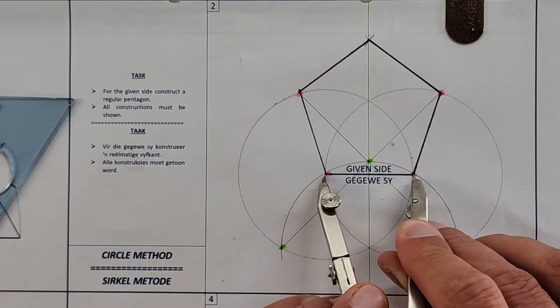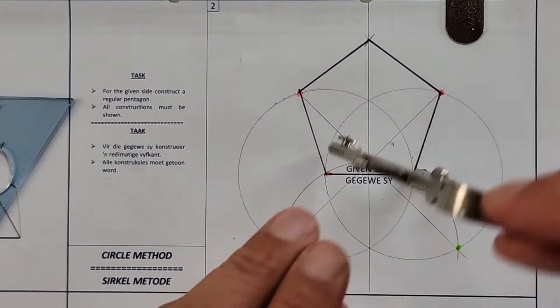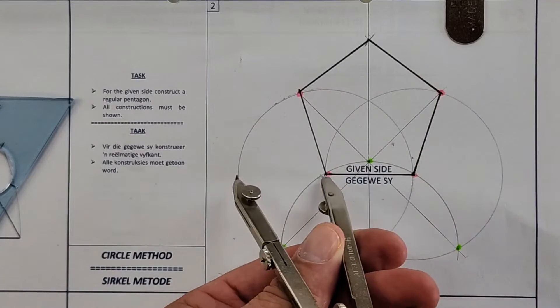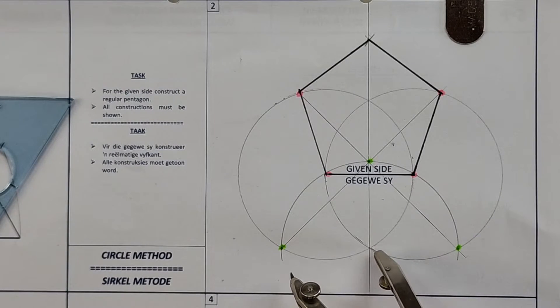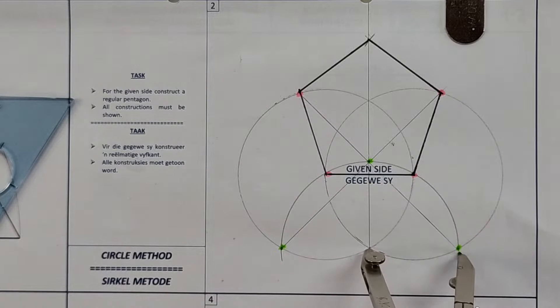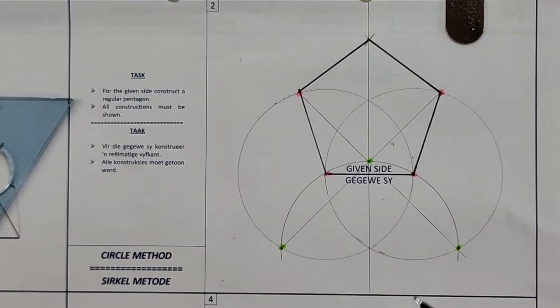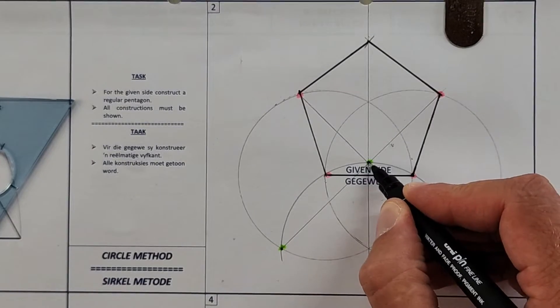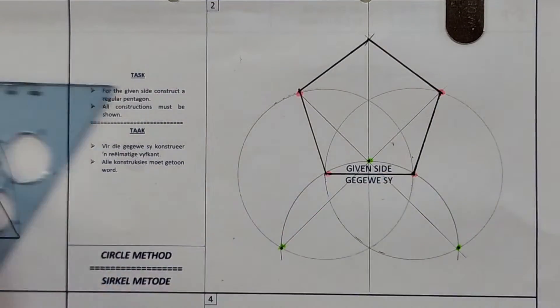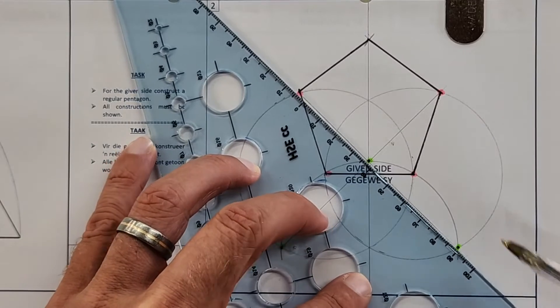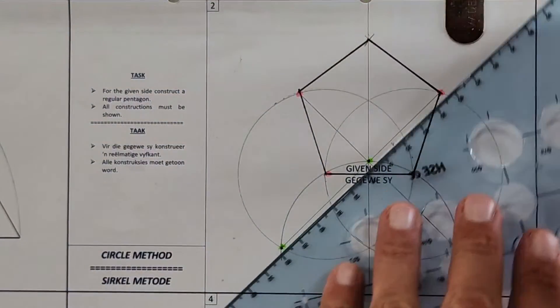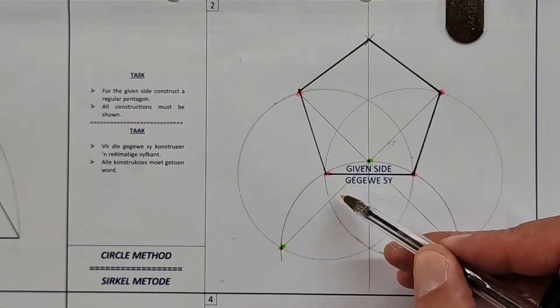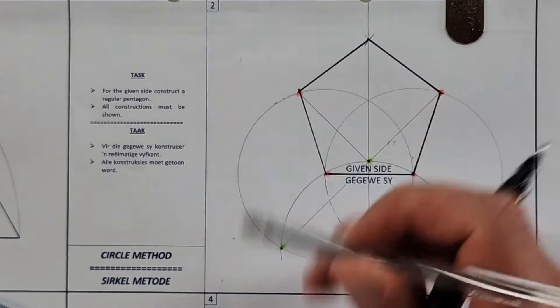Then we took that radius, did a full circle. Kept that same radius, full circle. Kept that same radius. Where they meet, those two circles meet, half a circle. That helped us determine this point and that point. Then drawing a perpendicular bisector helps us determine this point. And it's those three green points that we use to draw this construction line and that construction line.